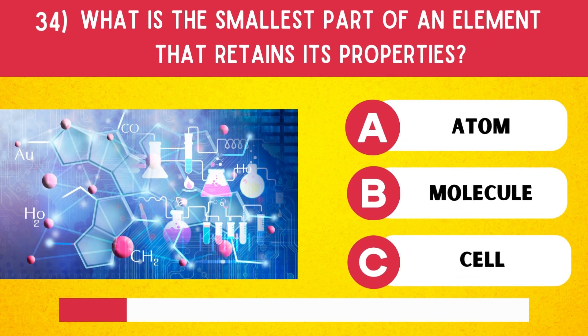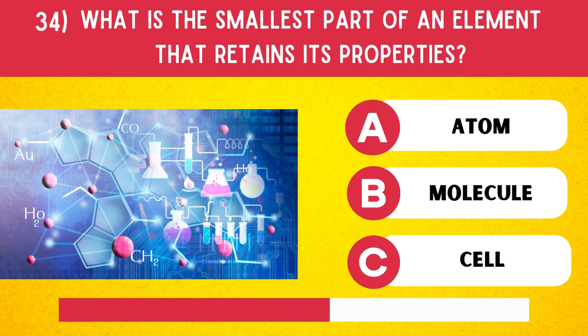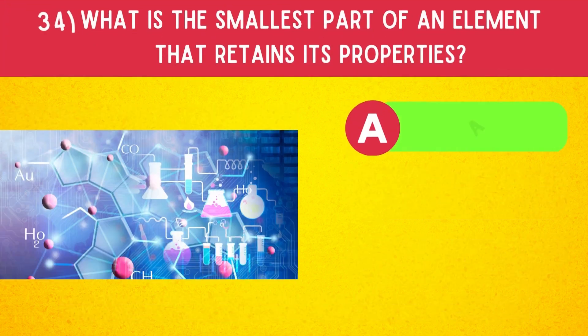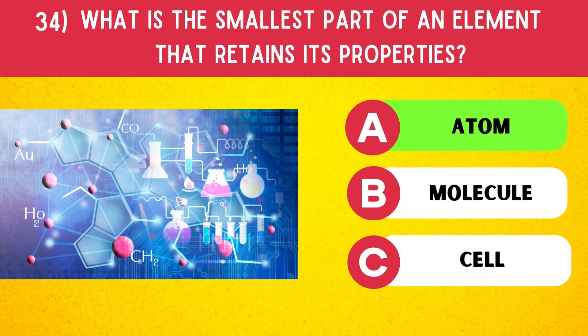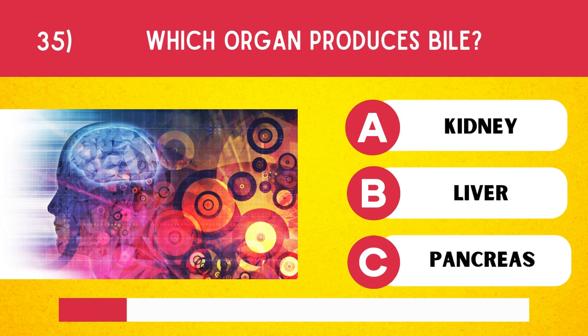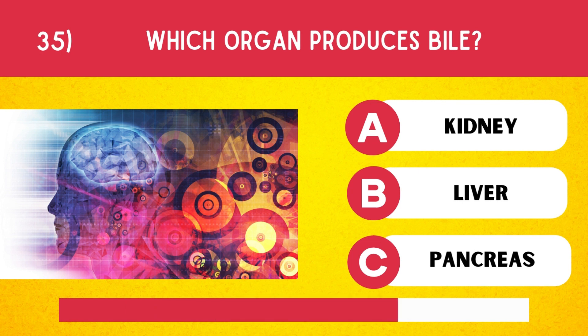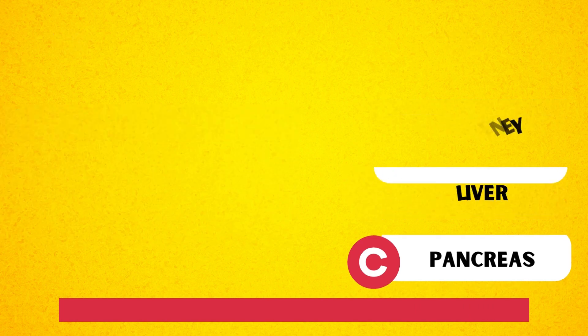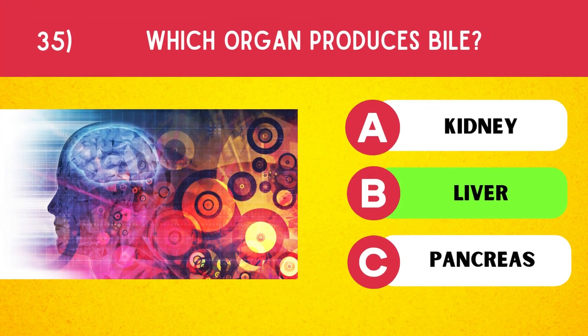What is the smallest part of an element that retains its properties? Atom. Which organ produces bile? Liver.